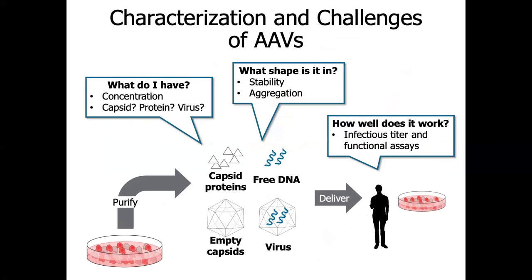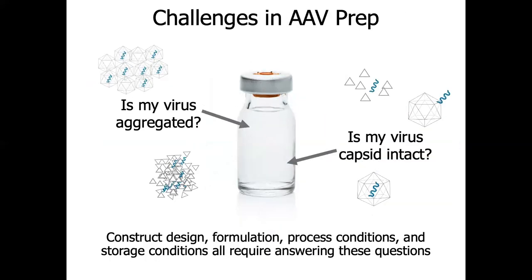Therefore, it is important to characterize the AAVs through the whole development process to understand your product. What is the concentration of your viruses? How much of the assembled capsids and viruses are present? Do you have free-floating capsid proteins? What is the stability of the viruses or capsids? Are they already aggregated or do they have a tendency to aggregate? What is the infectious titer and what is the efficacy? You could also ask if stability problems are the underlying reason for potency, purity, or immunogenicity issues.